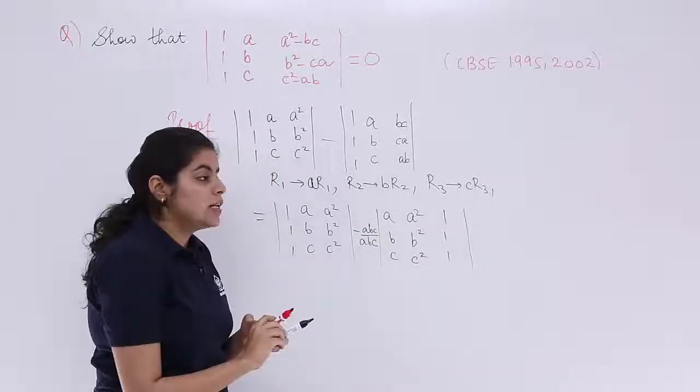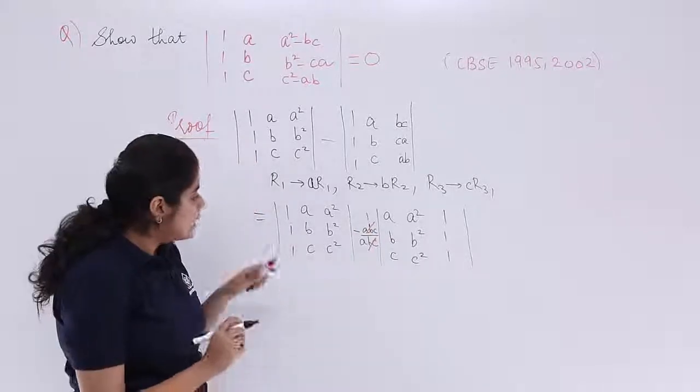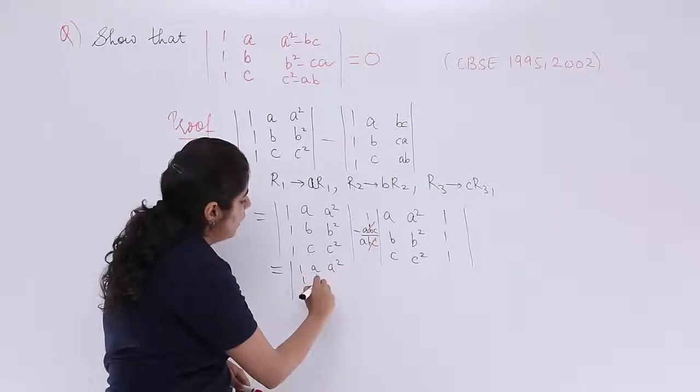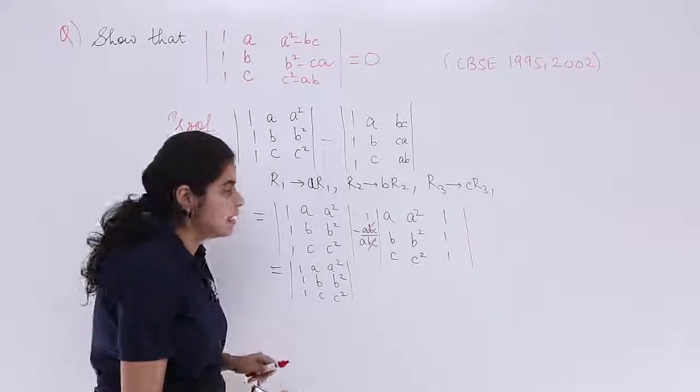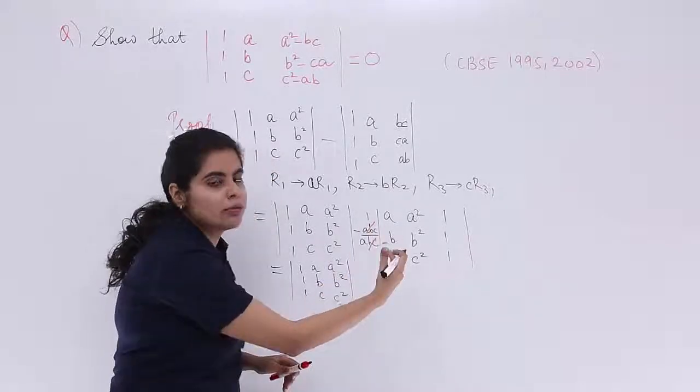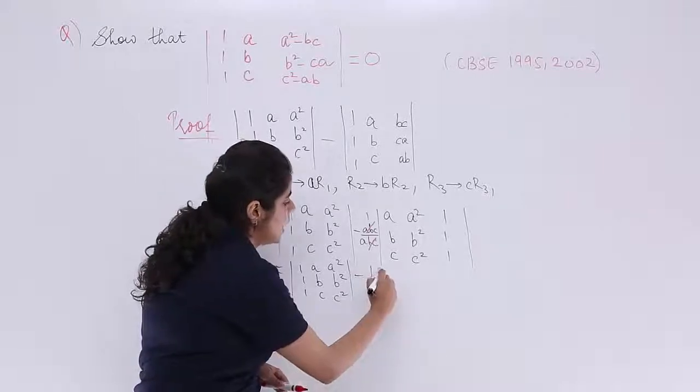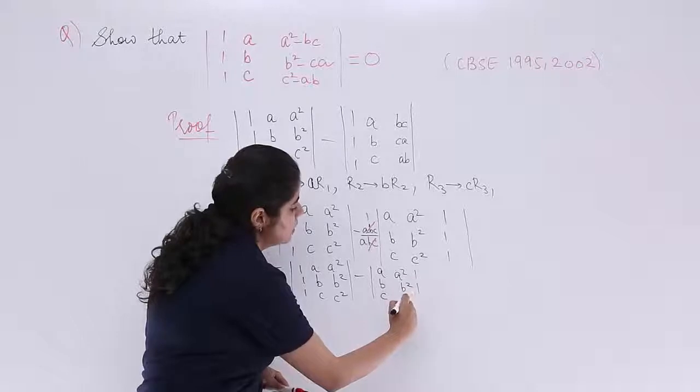It has become 1, 1, 1. Now, both these ABCs cancel and give me 1. So, now things change as 1, A, A square, 1, B, B square, 1, C, C square. No change in the first determinant. Minus one into something. One into something means that thing only. So, it is minus ABC, A square 1, B square 1, C square 1.